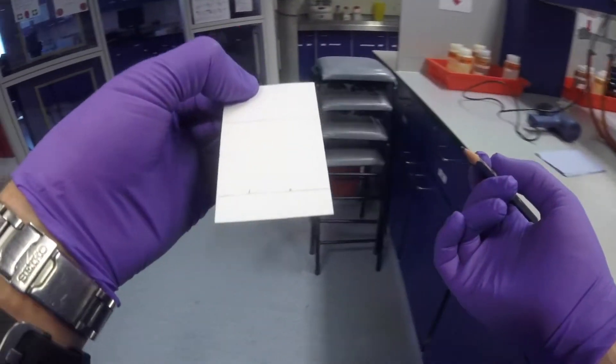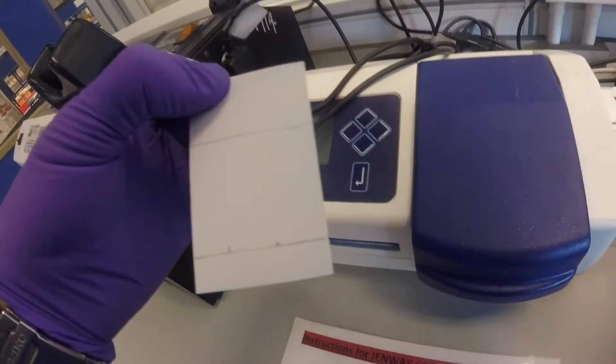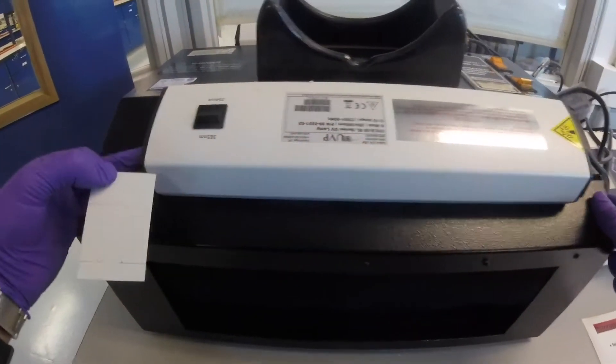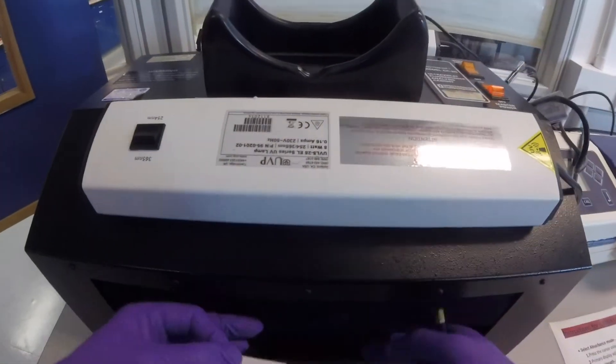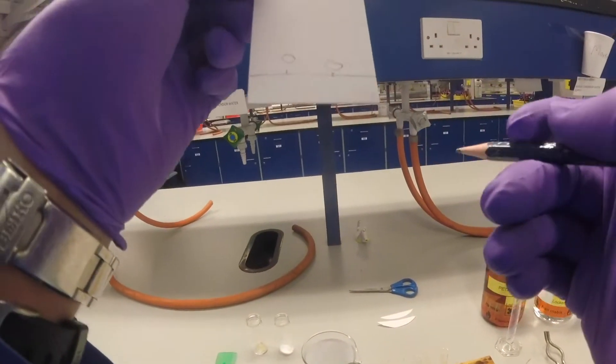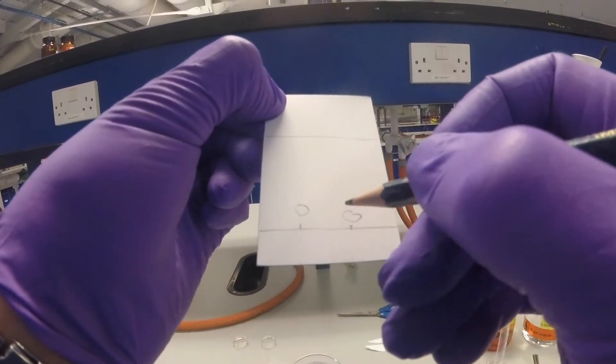Come in here, switch on our power. We'll pop this under here, see if we can bring the camera up. Hopefully you can see that we have two spots, one here and one here. We're going to draw around those and bring them out. So this is where our spots are. This one's higher than this one, this one's much lower down.